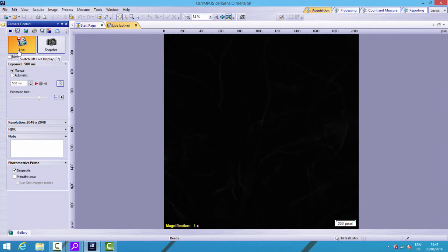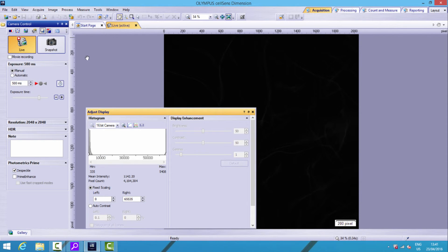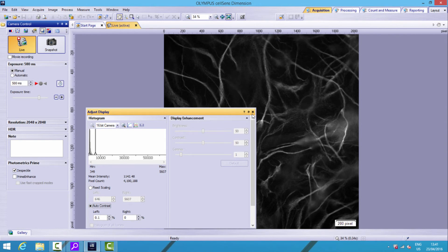So here we've got CellSense. Let's just go live, and let's go to image. Just check 500 milliseconds, image, auto-contrast. Right, now we can see the image.